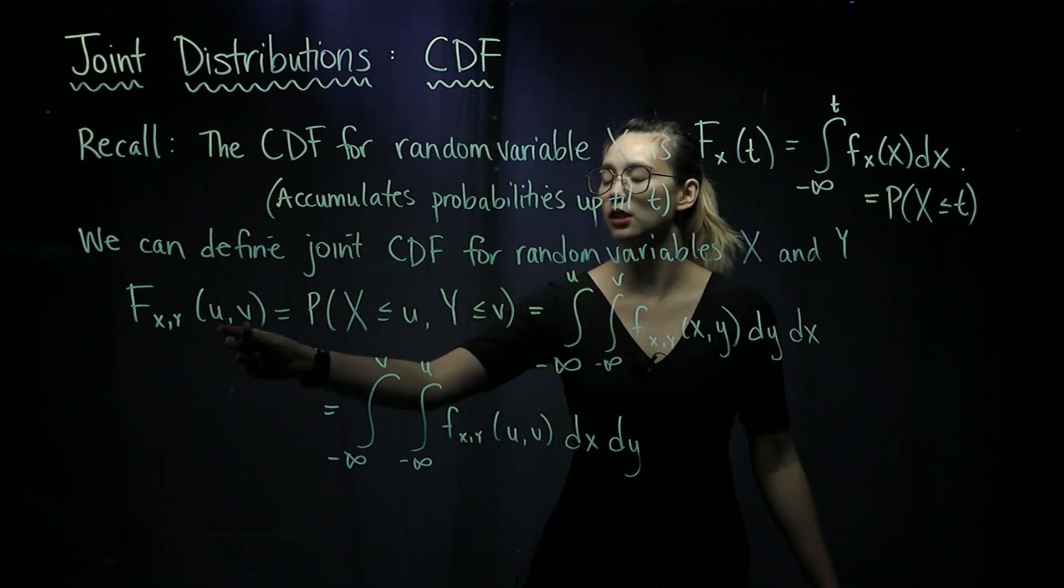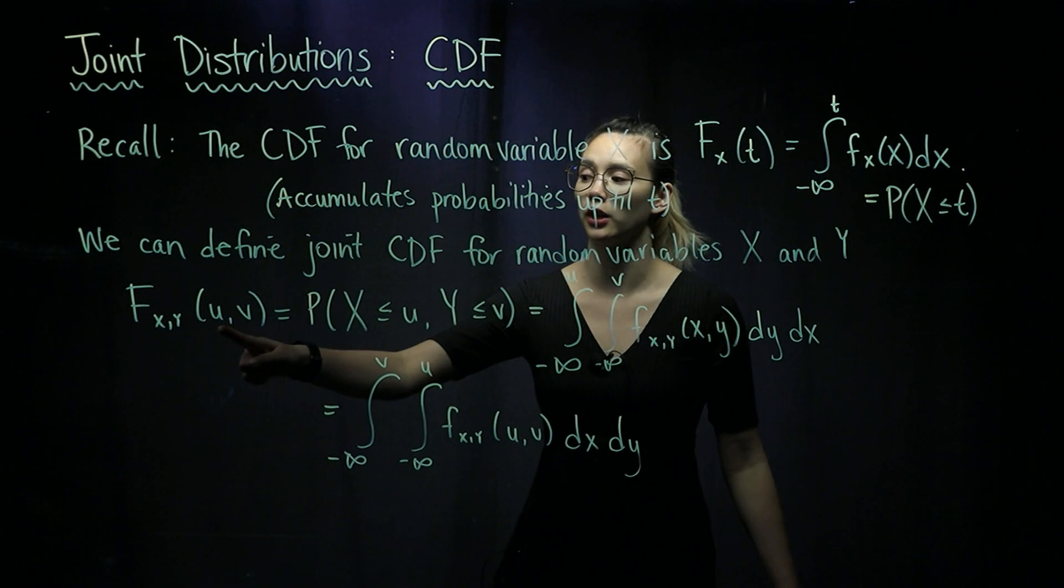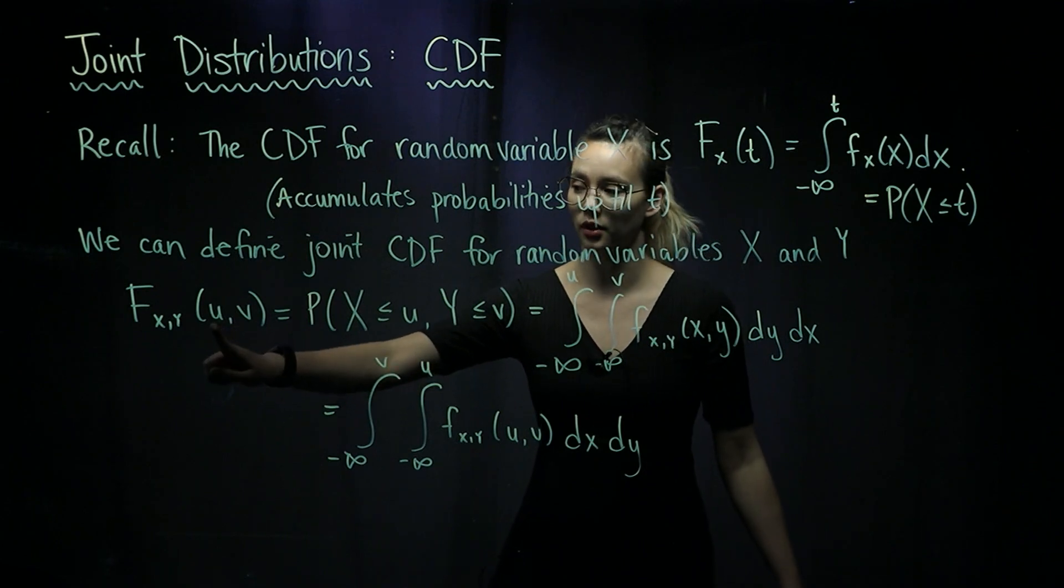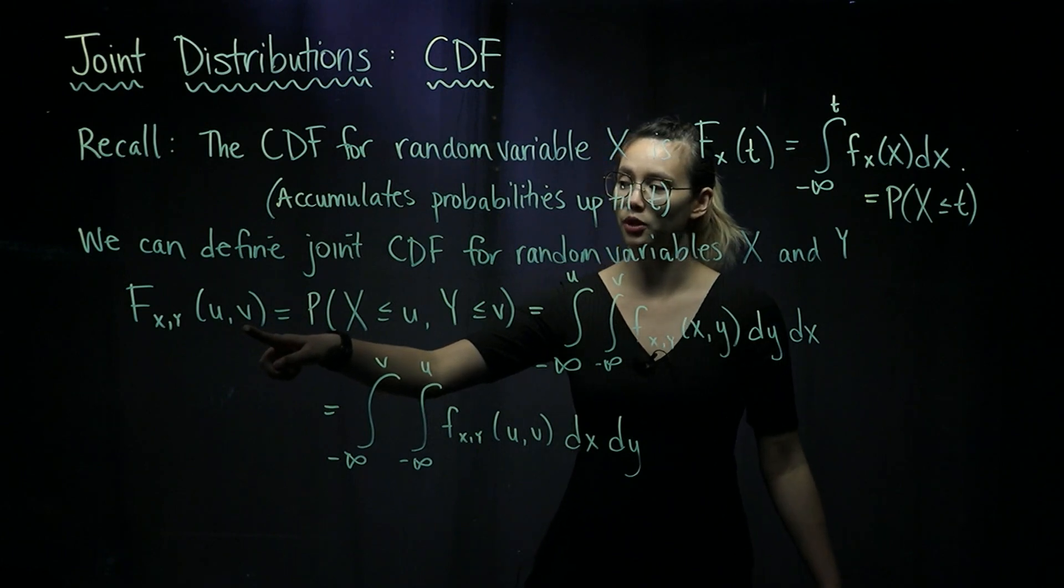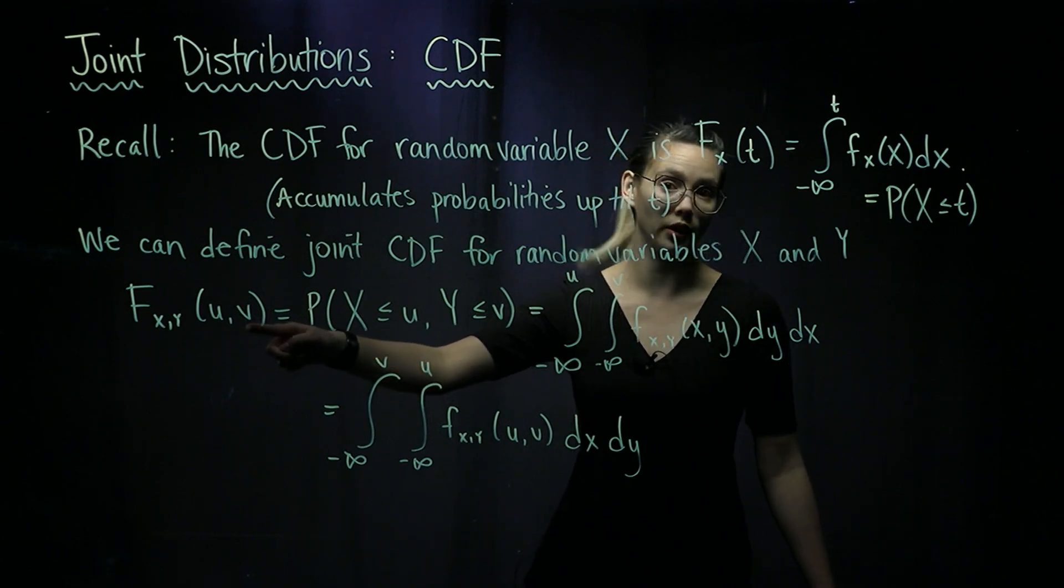Now we're going to need a point that we're going to evaluate up to for X, so this is going to be U, and then the point that we evaluate up to for Y, we'll call this one V.